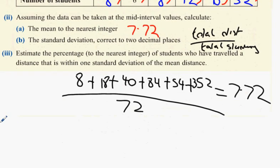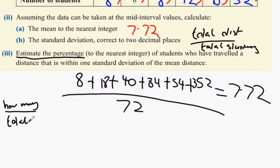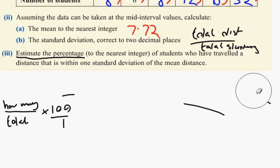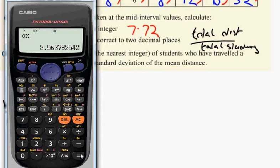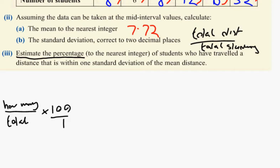This time it's looking for the percentage, not the total. Percentage is how many people you have divided by total, multiplied by 100. It's in between one standard deviation plus or minus. Using mid-interval values in the calculator: shift, stat, variable — standard deviation is 3.56.